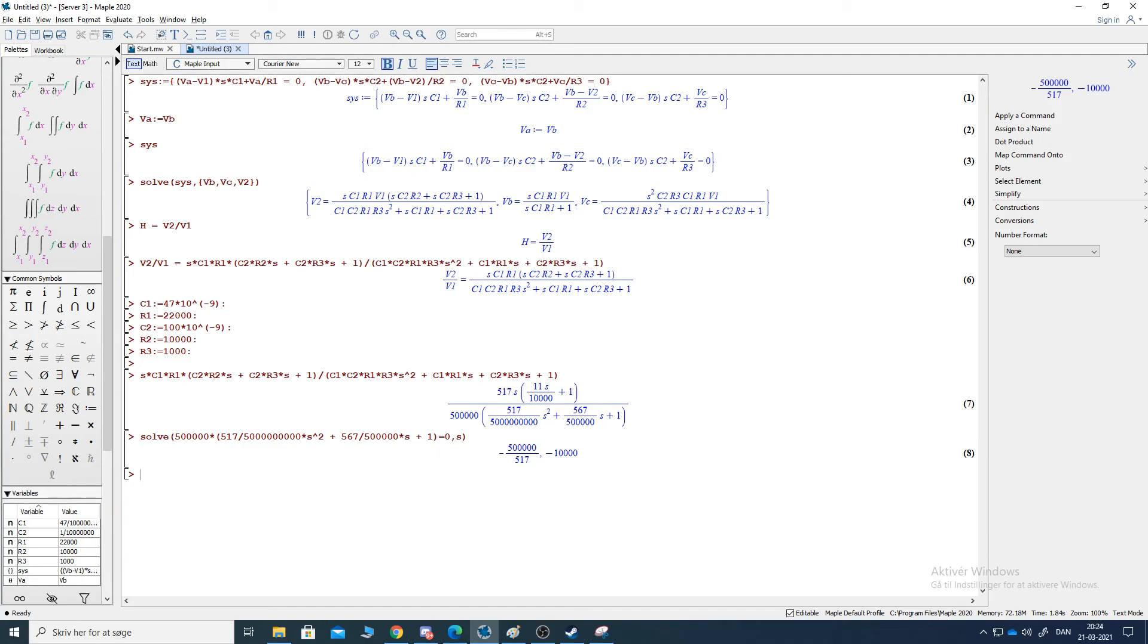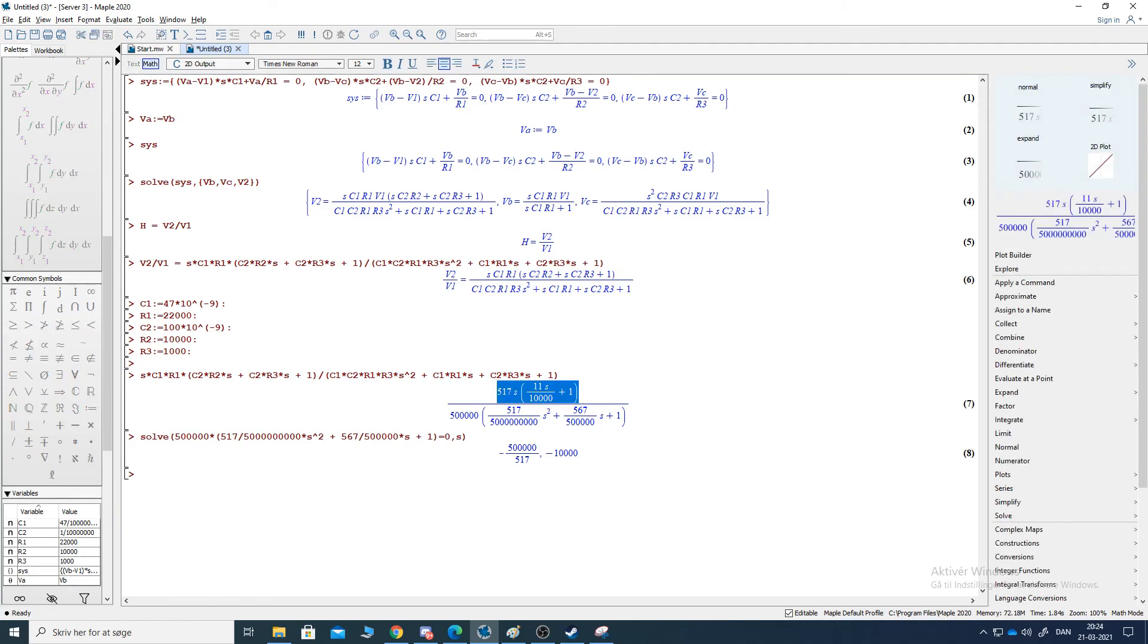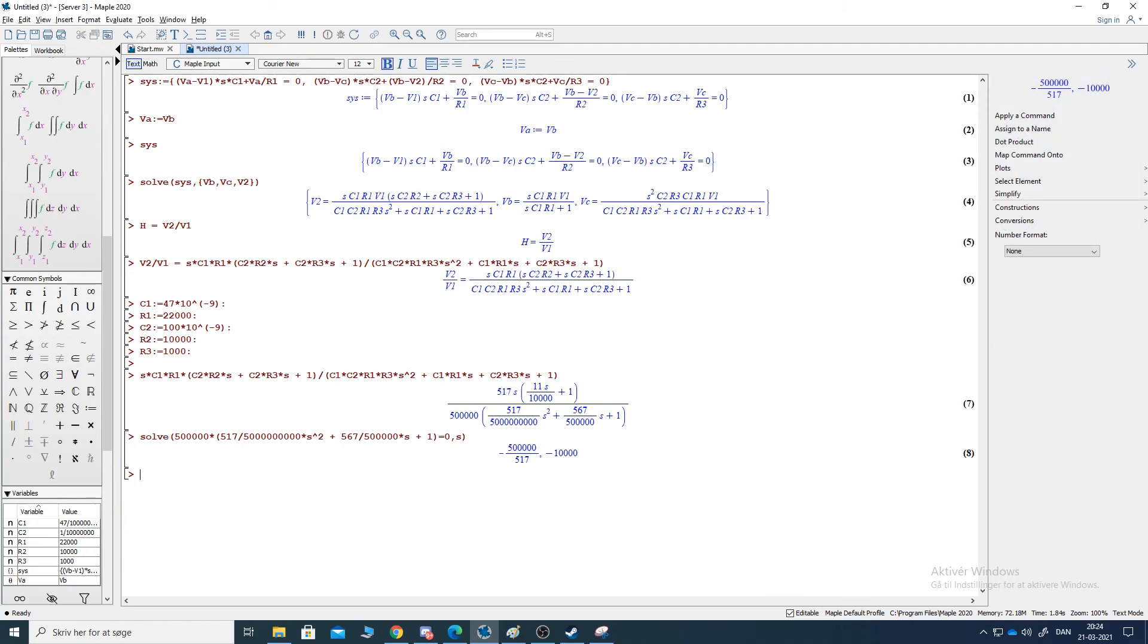The zeros are located at, are found by setting the numerator to zero and solving for s. Set to zero and solve for s. A zero is located at zero and some other negative frequency.